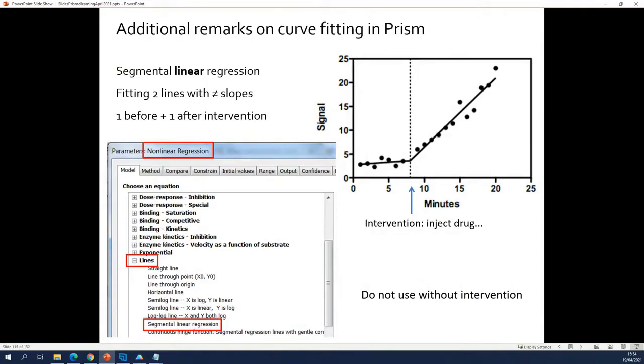This is something that I get asked relatively often. People who are doing an intervention will get a linear thing, but it consists of two lines. Before the intervention and after the intervention, you see a much more pronounced effect.